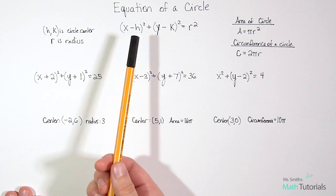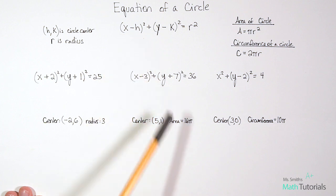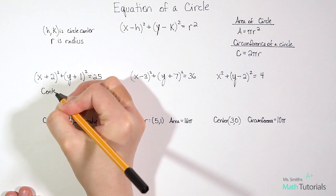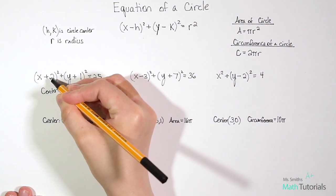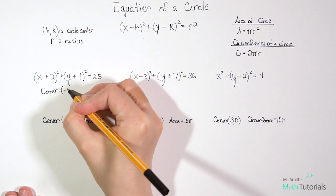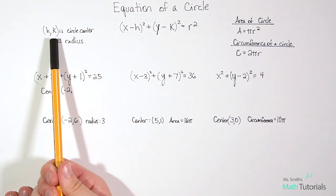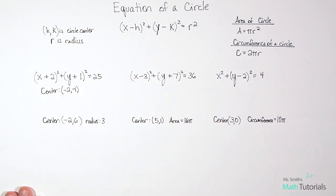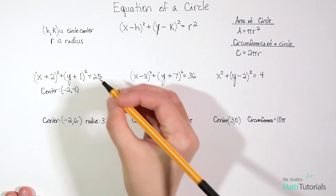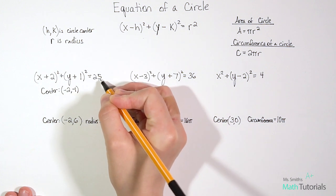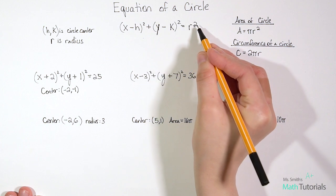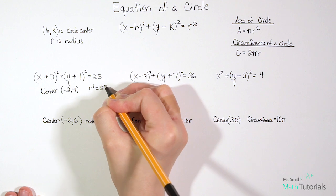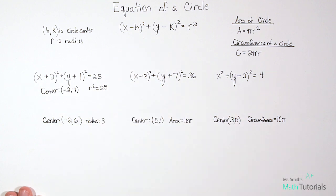But we've got to remember that the formula uses minus h, which means we need the opposite of positive two. So when I find the center, my x-value is negative two. When I look for the y-value, k, I see a positive one — but it's the opposite of that, so it will be negative one.